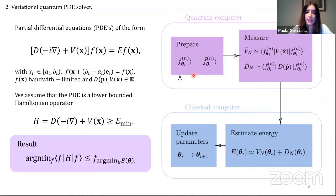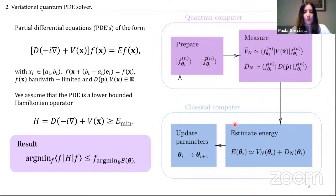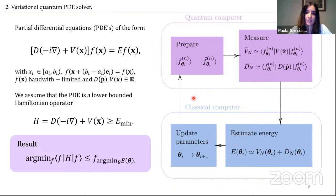The algorithm we propose is called the variational quantum PDE solver. First, we prepare a variational quantum circuit encoding the PDE solution. We measure this circuit to estimate expectation values of the operators comprising the PDE, which are passed to a classical computer to estimate the energy. Since measurements are finite, we can only estimate the energy with some uncertainty. This energy serves as the cost function for a classical optimizer that updates the circuit parameters iteratively until convergence.